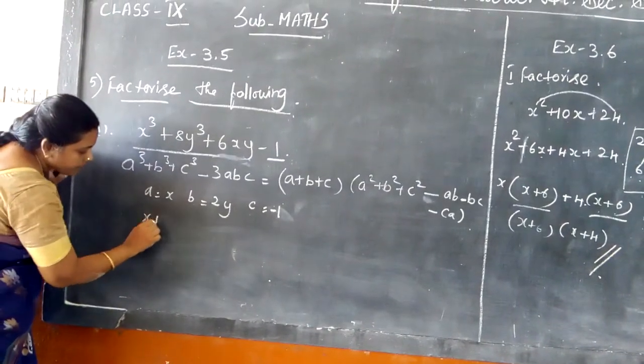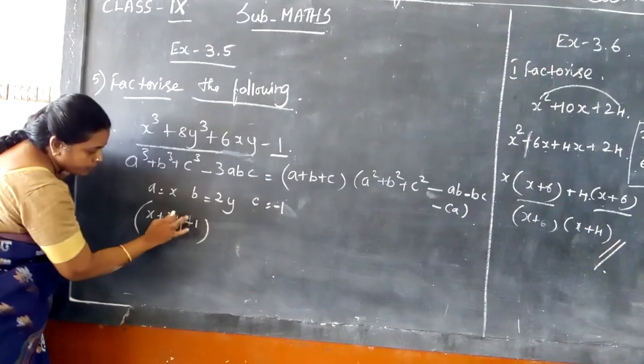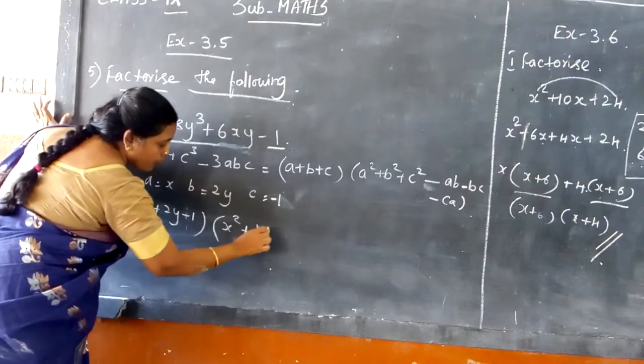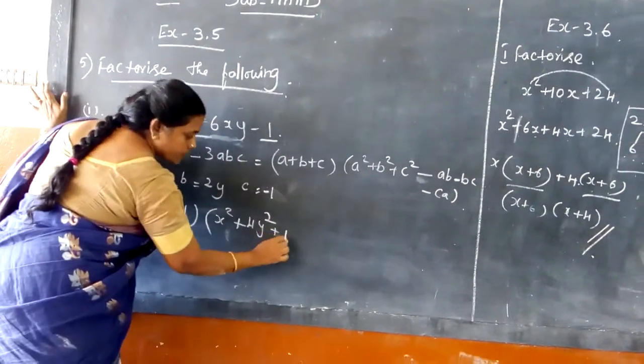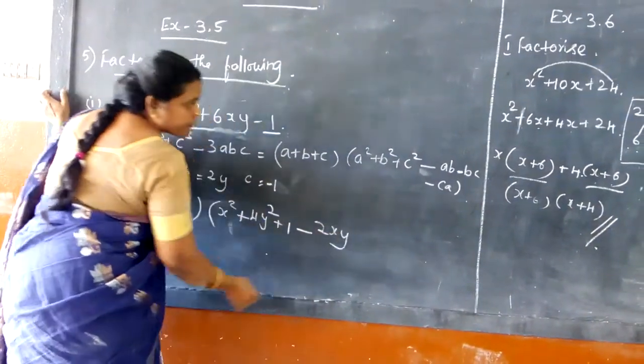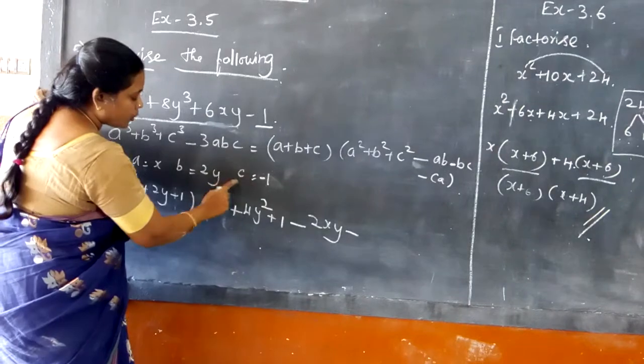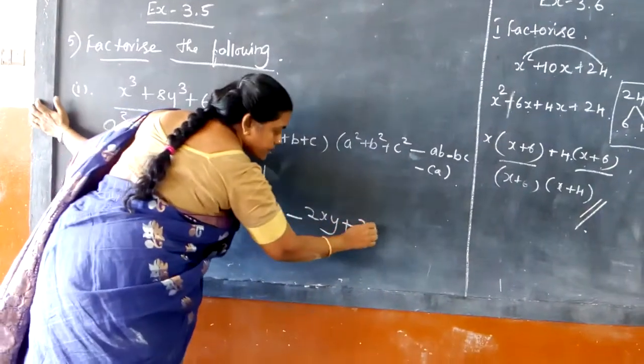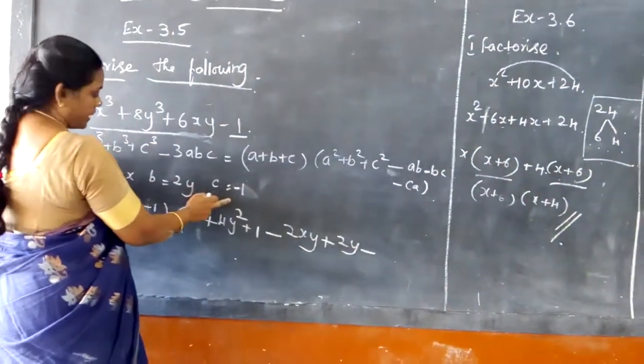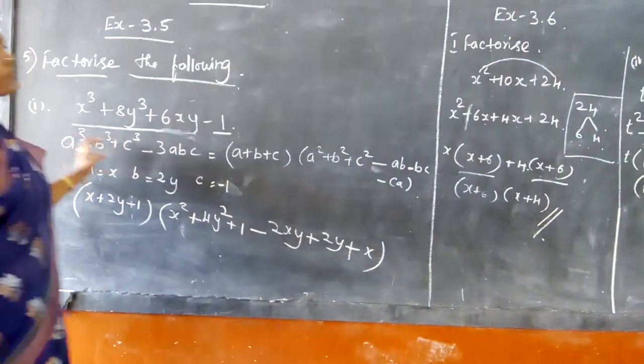So (x + 2y - 1) multiplied by x² plus b² which is 4y², plus c² which is 1, minus ab which is 2xy, minus bc which is minus 2y so plus 2y, and minus ca which is minus x. This is the answer for this equation.